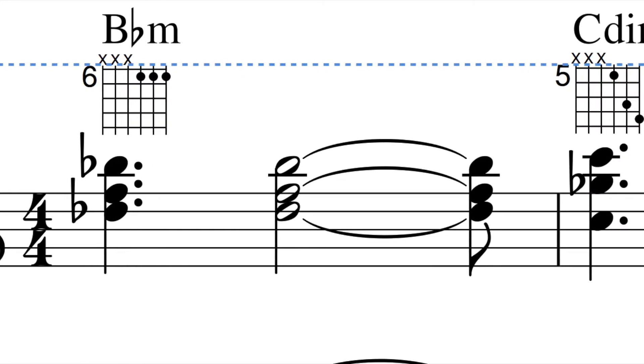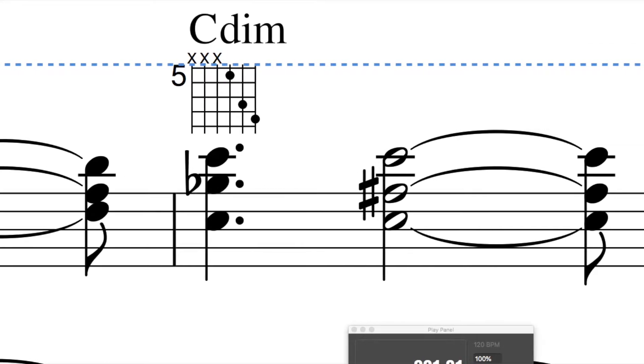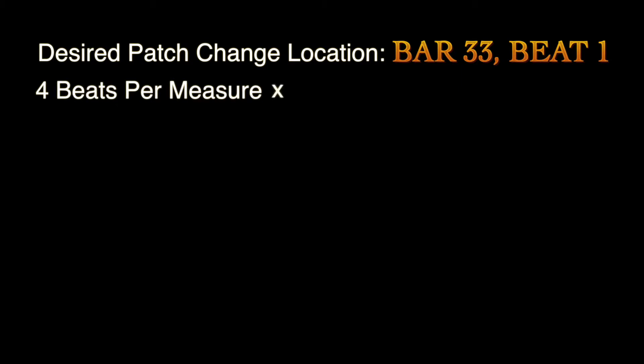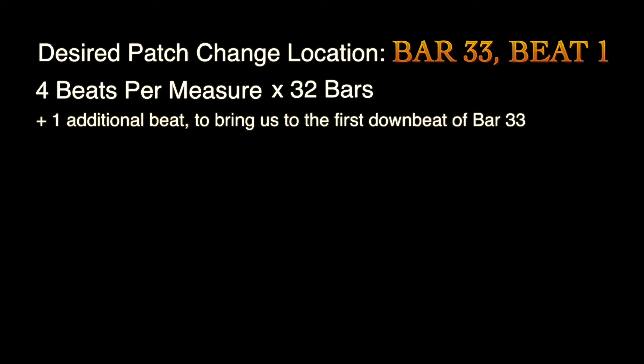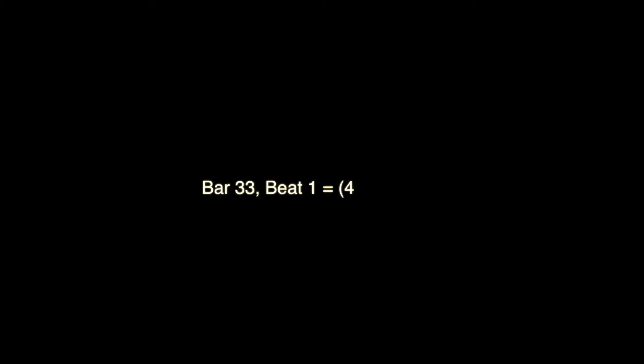If you've never worked with Beat Position before, don't worry — here are a few examples. Let's say you have a song in 4/4 and want the patch to change on Beat 1 of bar 33. Take the time signature of 4 and multiply that by 32 bars, which is the number of beats elapsed right before our desired downbeat. Then just add 1, which gives us the final Beat Position of bar 33, beat 1. So in this case, the Beat Position is 129.